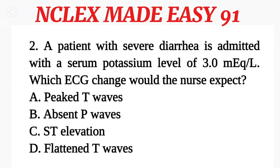Question 2. A patient with severe diarrhea is admitted with a serum potassium level of 3.0 mEq per liter. Which ECG change would the nurse expect? A. Peaked T waves. B. Absent P waves. C. ST elevation. D. Flattened T waves.